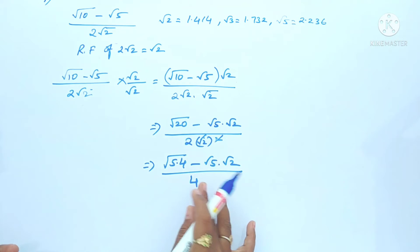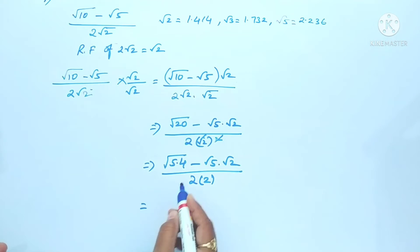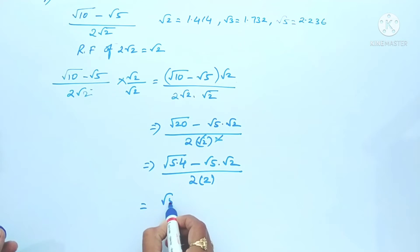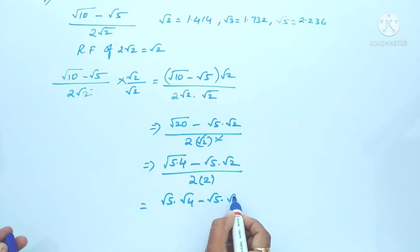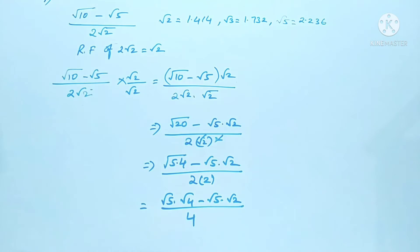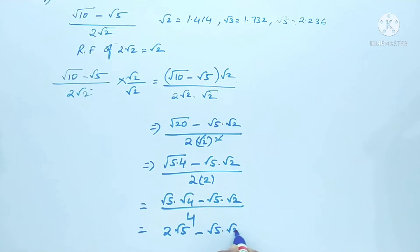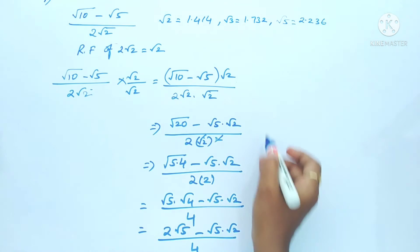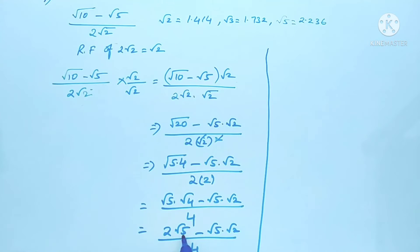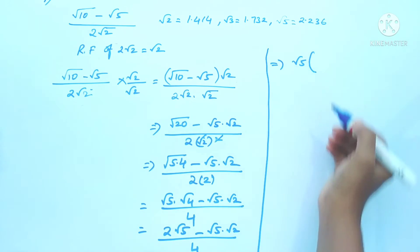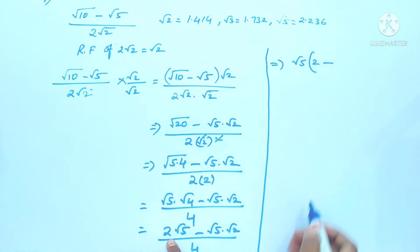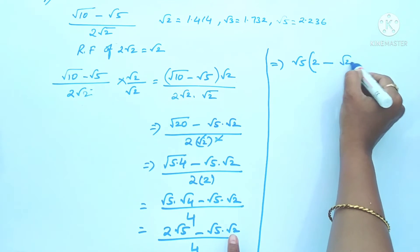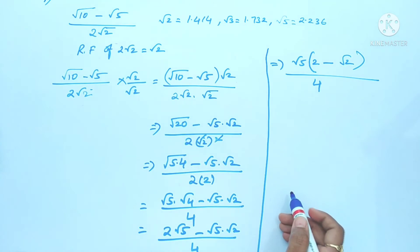The square and root cancel, so √4 = 2. Now we have (√5 × 2 - √5 × √2) / 4. If you observe, √5 is present in both terms, so we take √5 as common. This gives us √5 × (2 - √2) / 4.